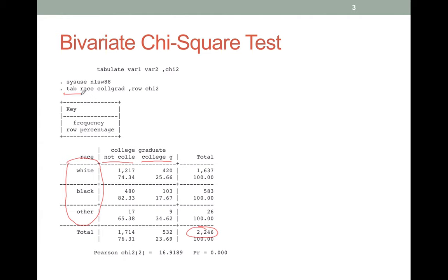We have a large number of observations, in this case we've got 2,246, and for each combination the tab command gives us the counts. For example, we have 480 individuals that self-identified as black who did not go to college and 103 who self-identified as black that did go to college.